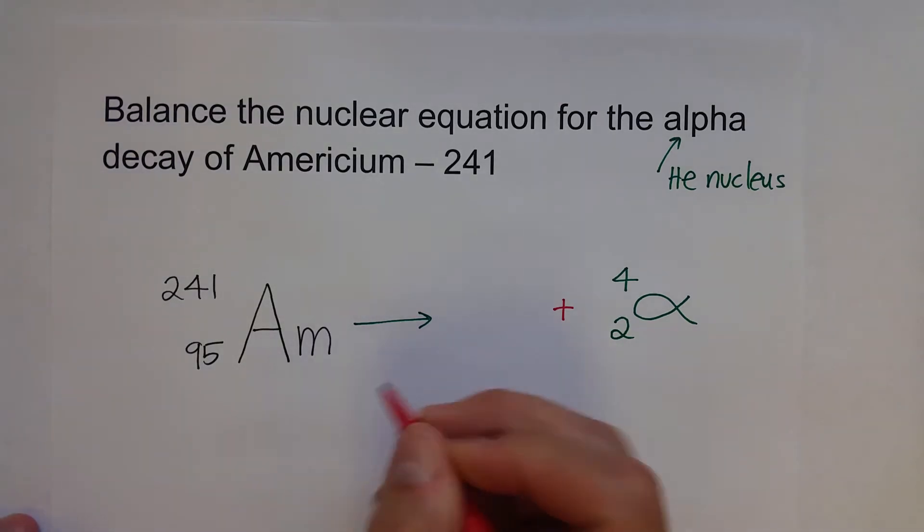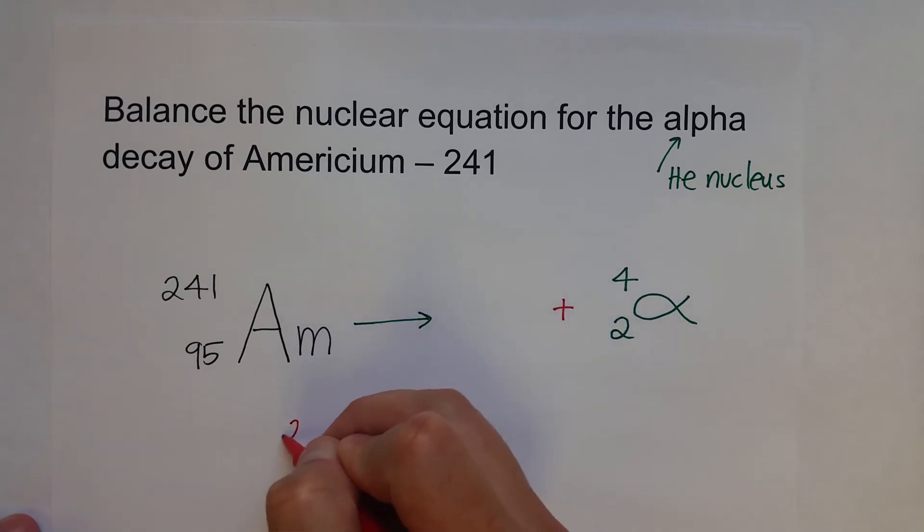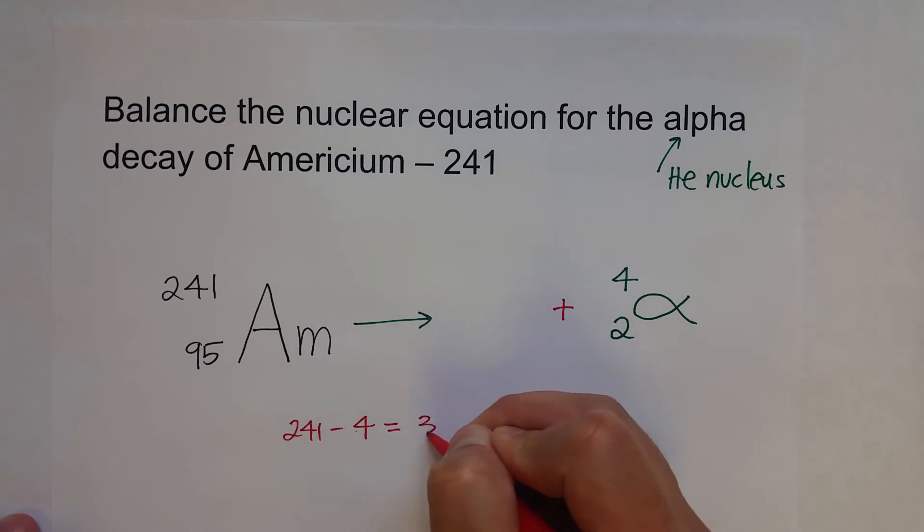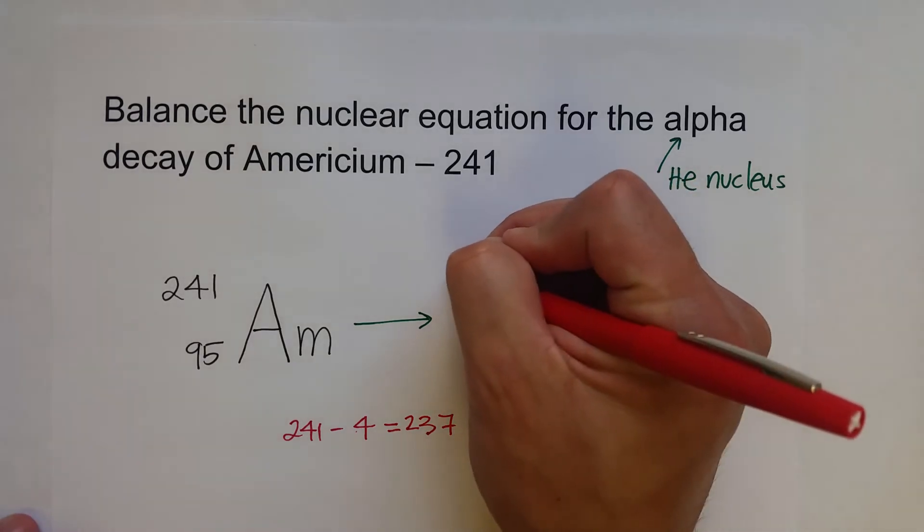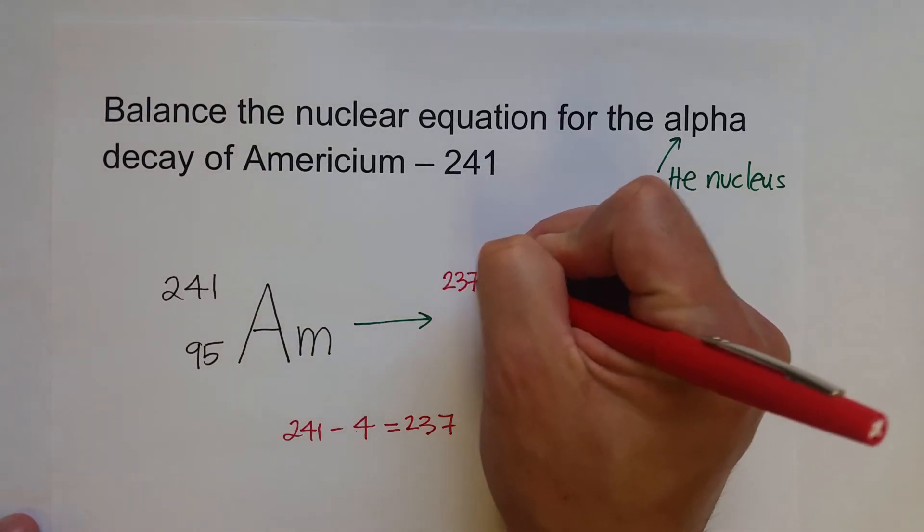So, what is missing here? Well, we can just do a quick little bit of subtraction. 241 minus 4 is equal to 237. So, now we know that the new isotope that's created has a mass number of 237.